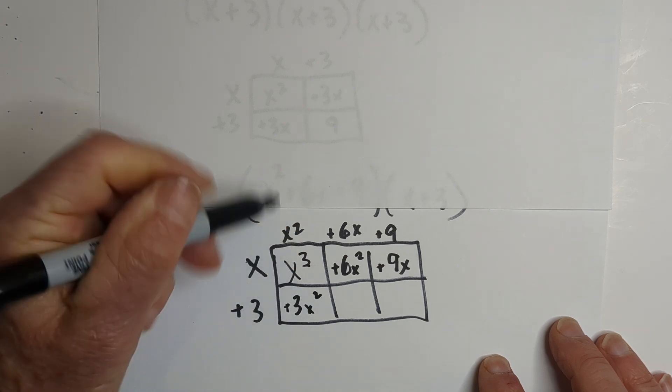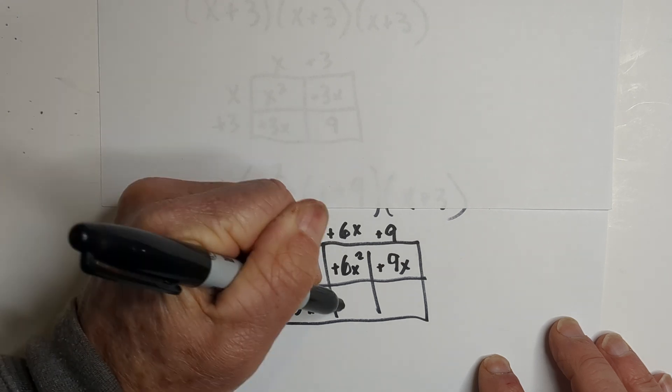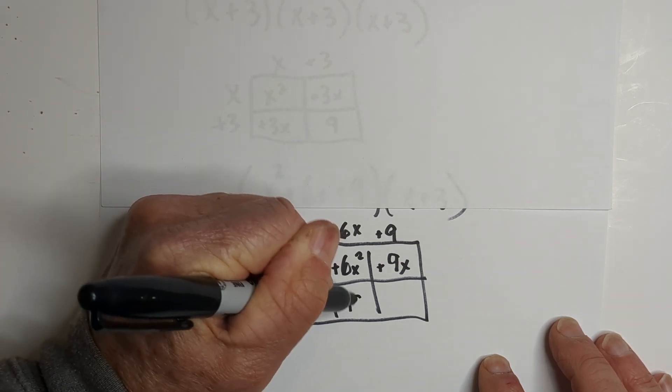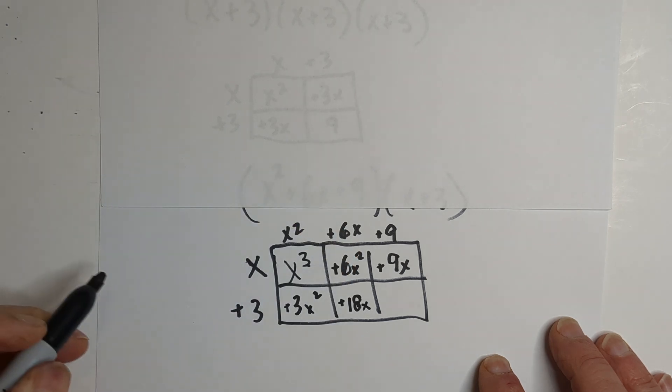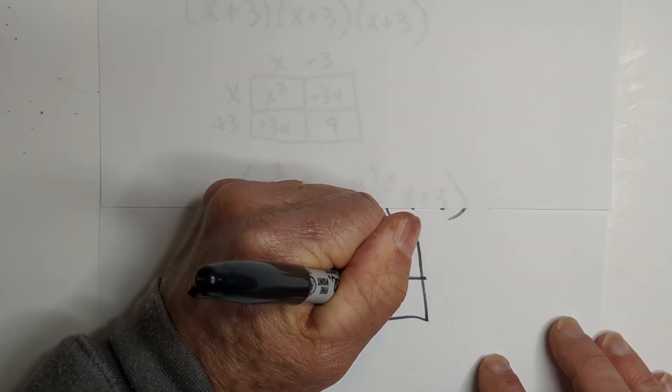Now let's move down to the bottom. 3 times x squared is a positive 3x squared. And then we have 3 times a positive 6x, and that's 6, 12, 18 - positive 18x. And now we have a positive 3 and a positive 9, and that is a positive 27.